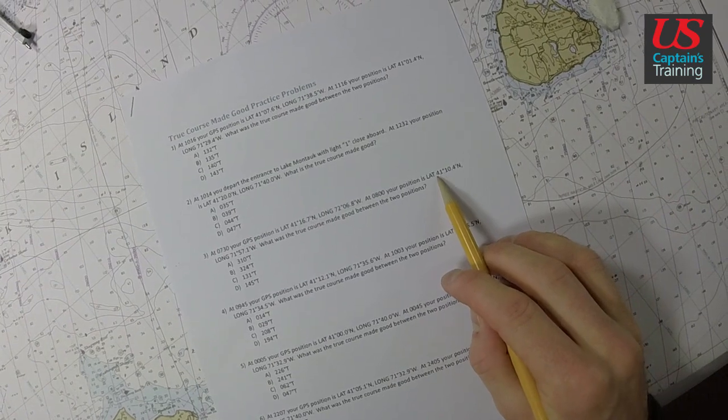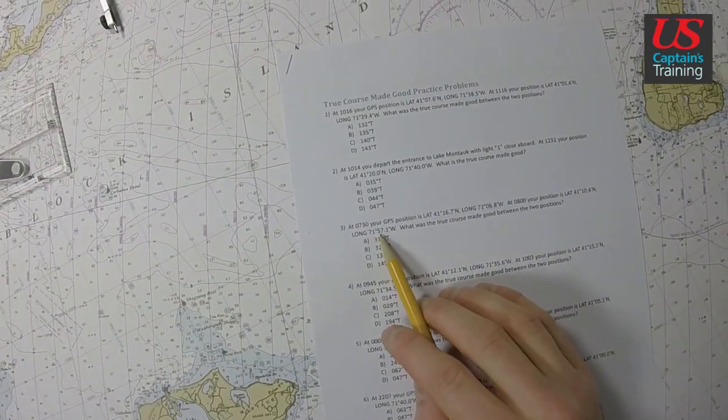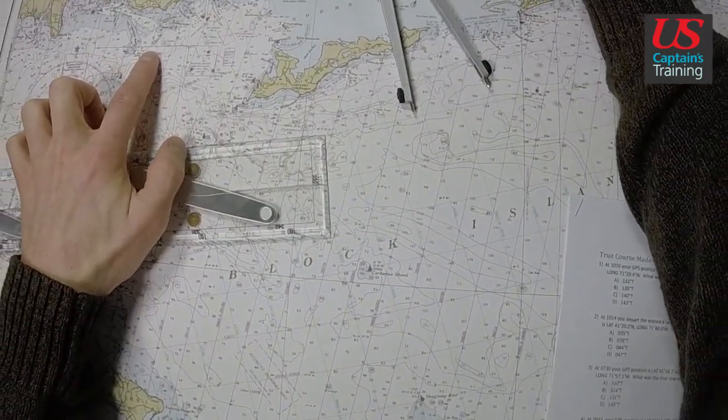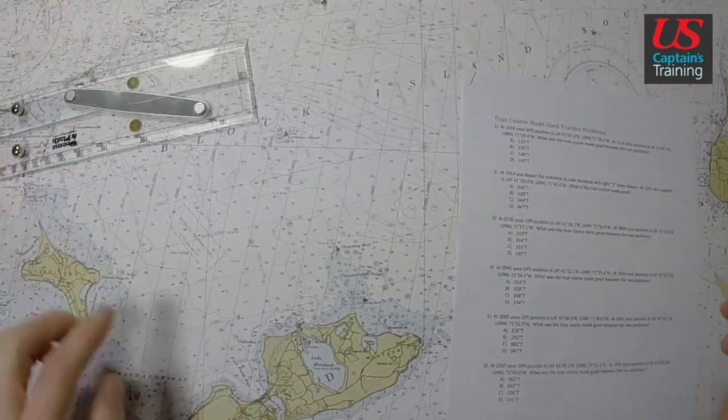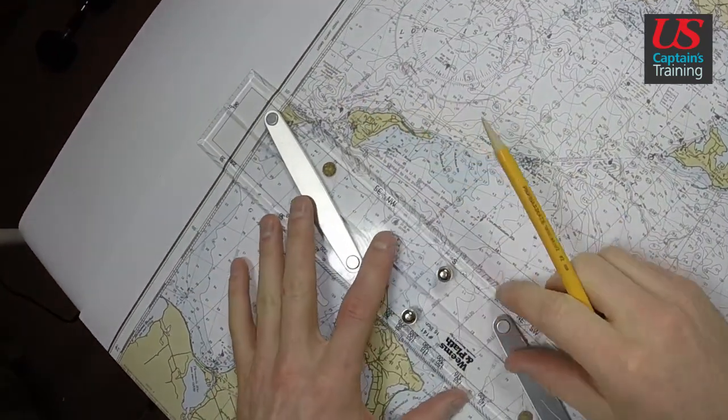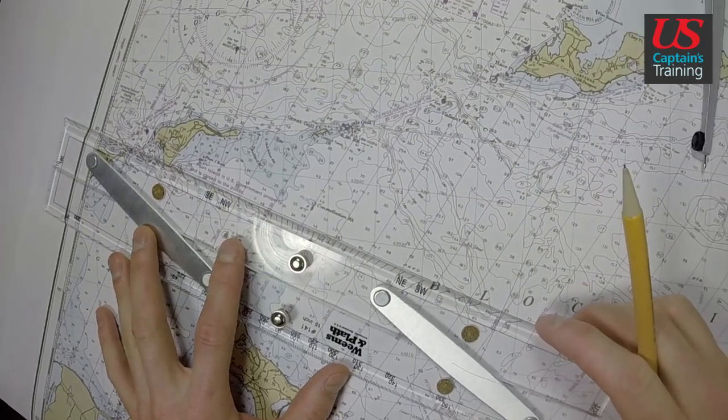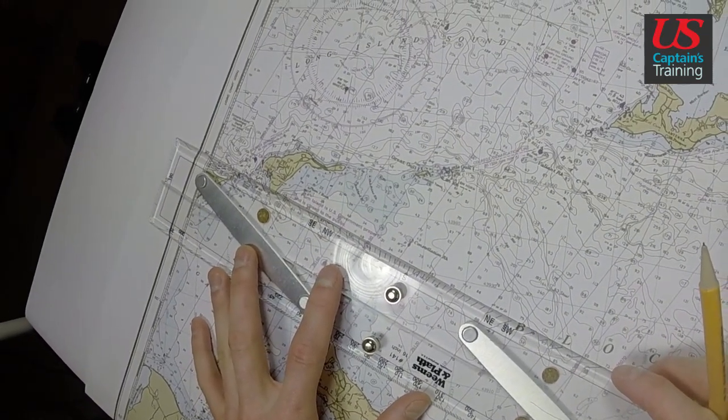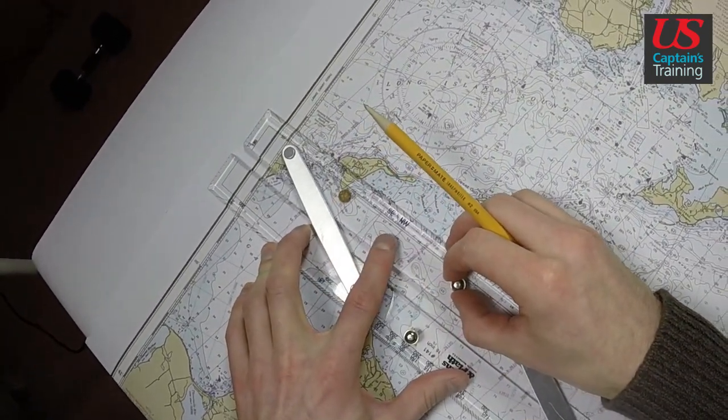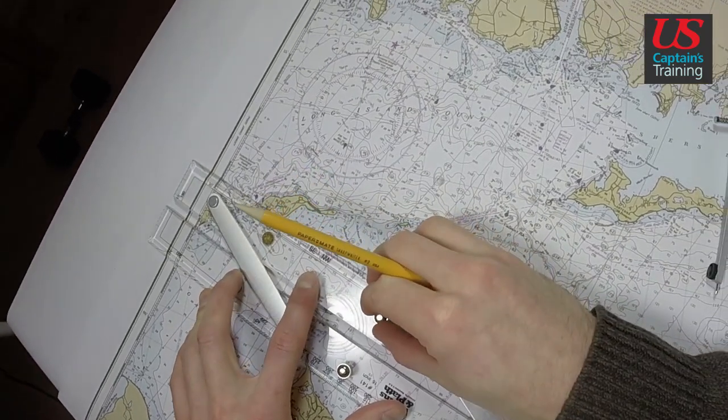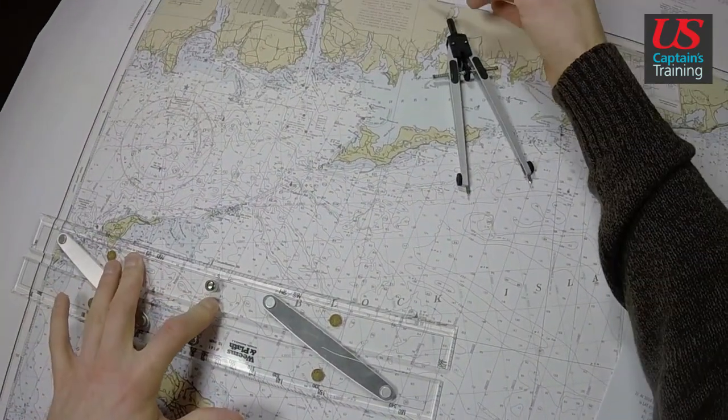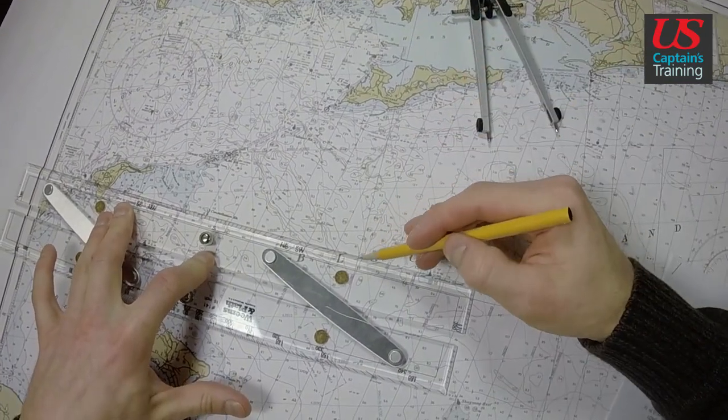Okay, now let's find the end. So we found 41.16.7, 72.06.8. Now our end is 41 degrees 10.4 minutes and 71 degrees 57.1 minutes. 57.1 is going to be over here, and then 41.10.4. Here's 41.10. Line this up. I'm lining it up on the outer part of the parallel rules this time. 41.10.4, here's 0.5, so 0.4.